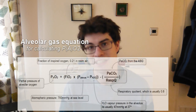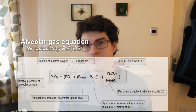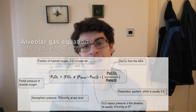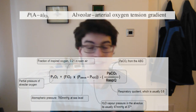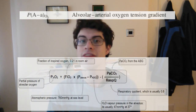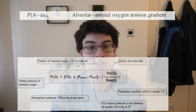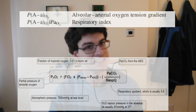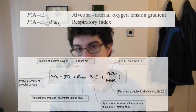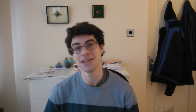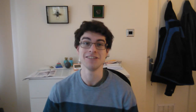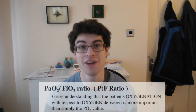We need a number of indices to tell us about oxygenation and ventilation. First, we have the alveolar-to-arterial oxygen gradient. Then we have the respiratory index, which is that divided by the PaO2. And then most importantly, we have the PaO2 to FiO2 ratio.